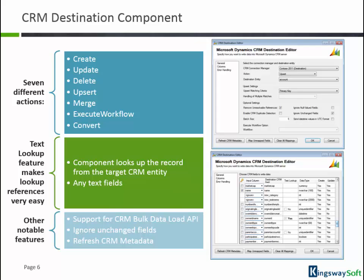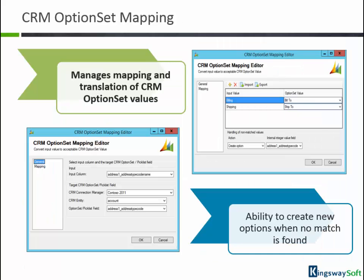The refresh CRM metadata feature in both our CRM source and CRM destination editor allows you to update the components to use the latest CRM metadata with a single click. The integration toolkit also offers a unique option set mapping component that provides a consistent way to manage option set value mapping. It also provides the capability of creating new options when no match is found.